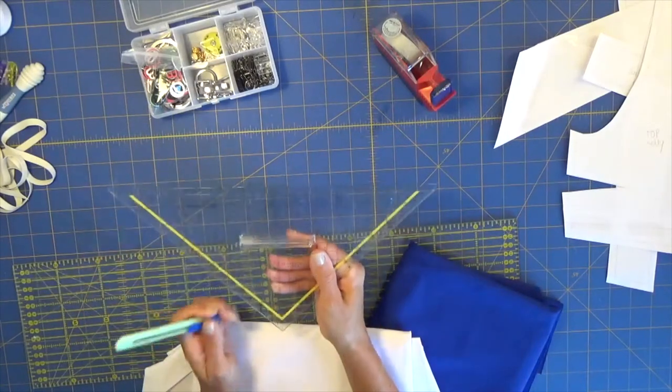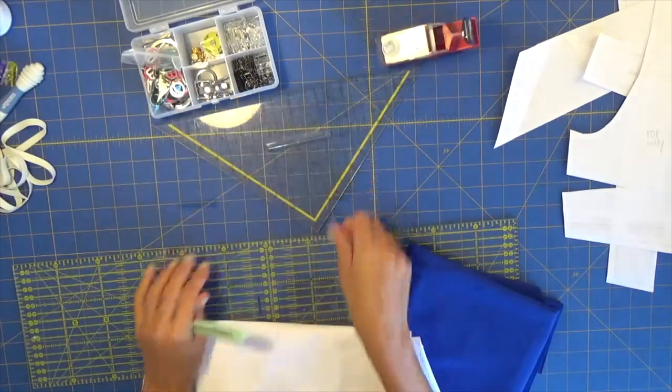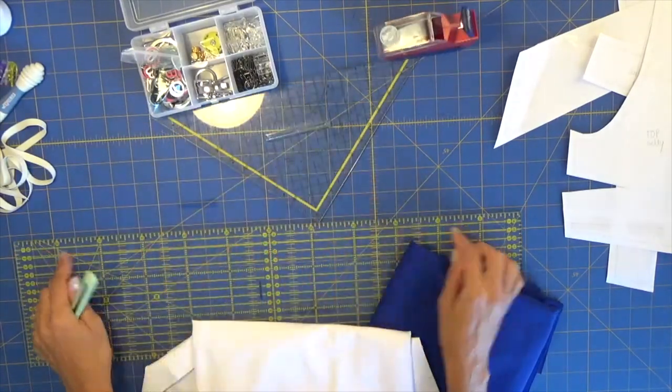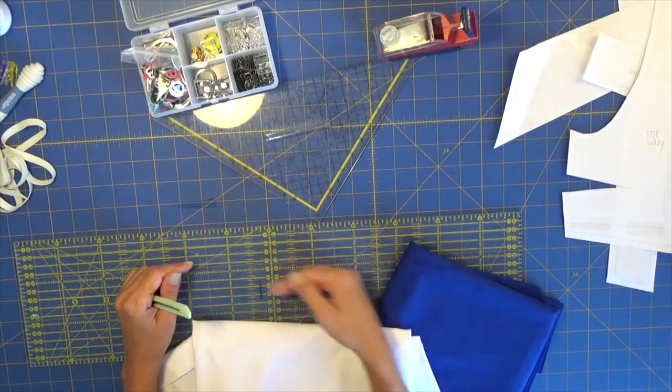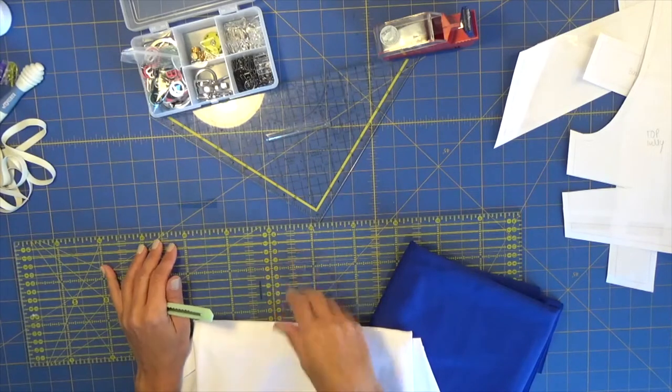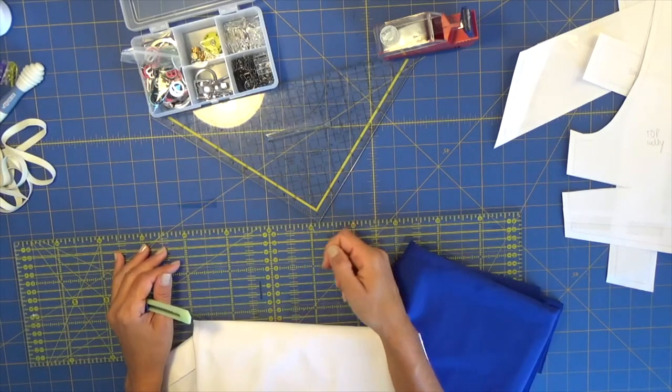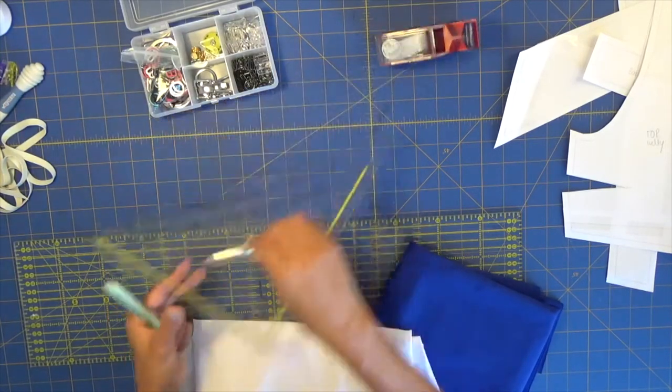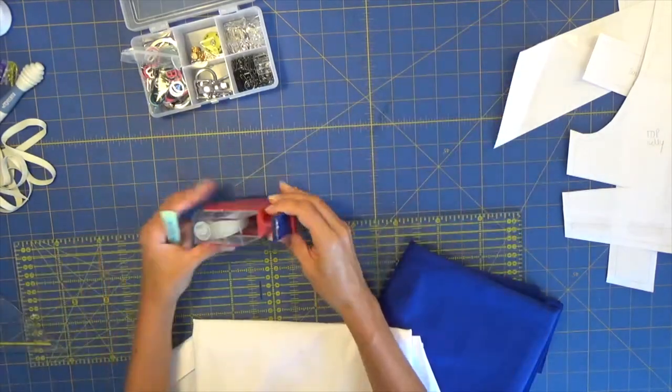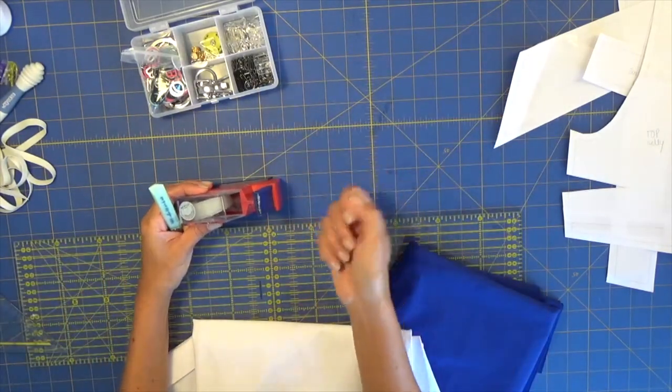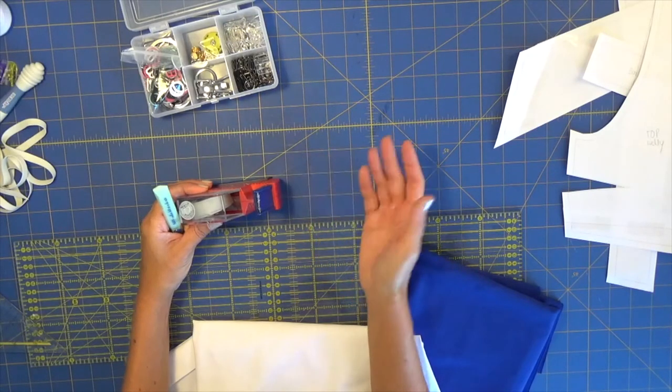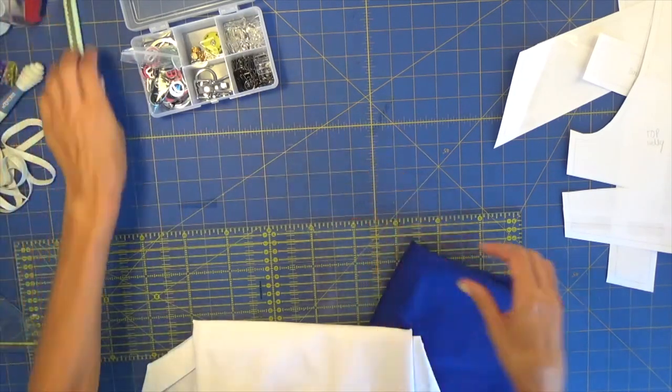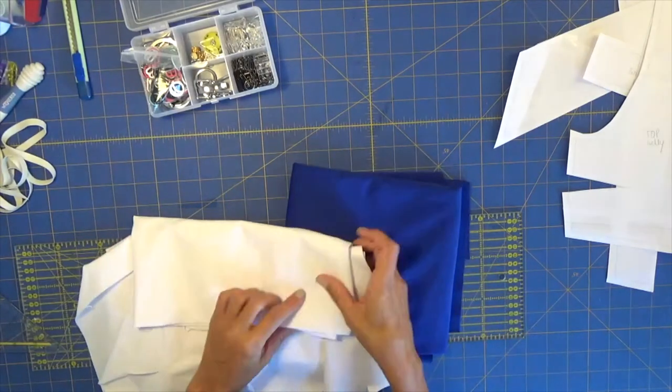Then I also have this big ruler with the parallel lines horizontally and vertically. This is very good also when you are designing something, it's very useful. Then of course tape to glue, to tape all your pattern pieces together, paper pattern pieces together.